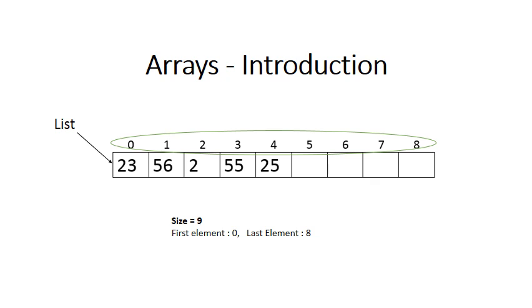The second thing to note is that the elements have position indicators. In C# we call them indexes. So you'll see the first element is at index zero or position zero and the last element is at position eight.